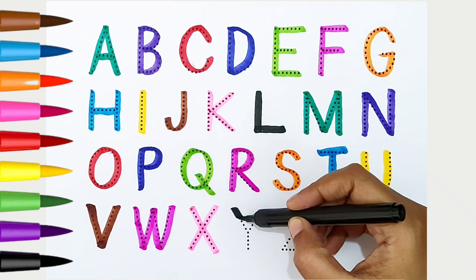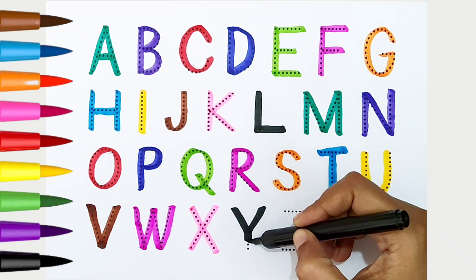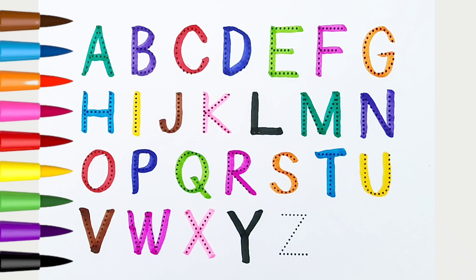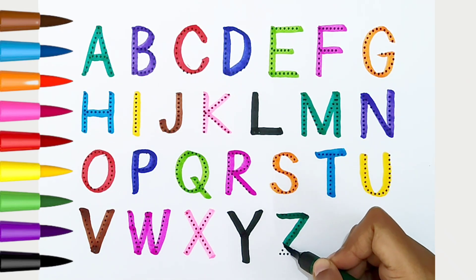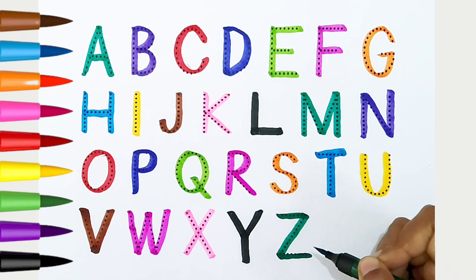Y, black color. Y is for yawn. Z, dark green color. Z is for zigzag.